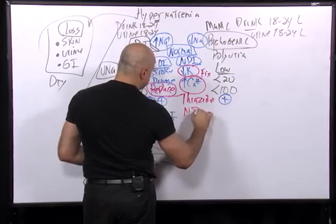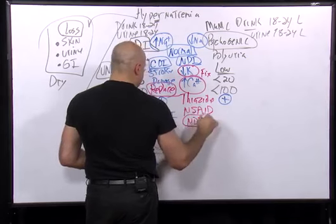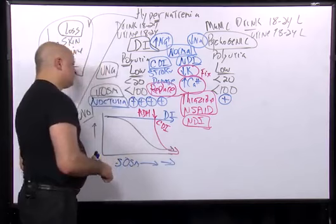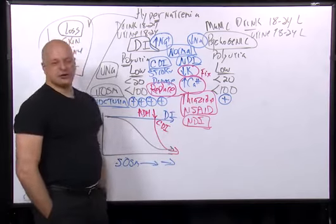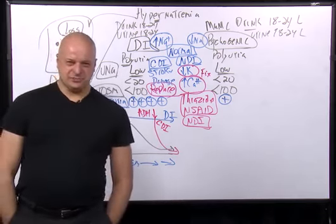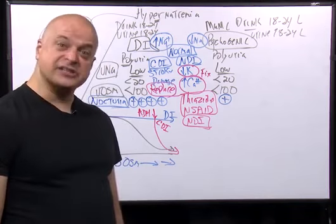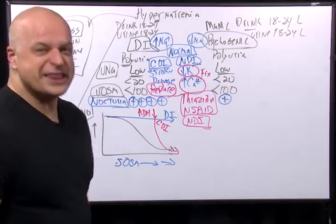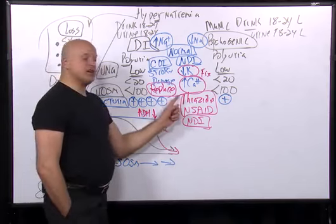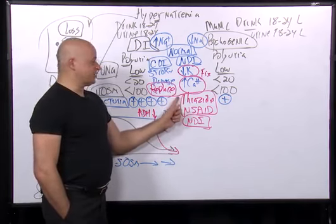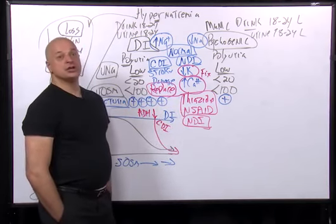Thiazides and non-steroidals can also fix nephrogenic diabetes insipidus. Thiazides alter the renal concentrating ability, and inhibiting prostaglandins with non-steroidals does it too — even though it seems counterintuitive to give a diuretic to someone urinating 12 liters a day.